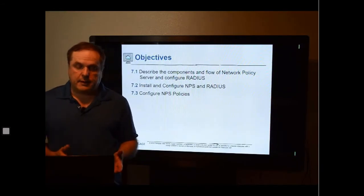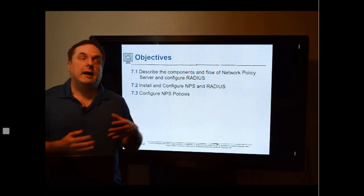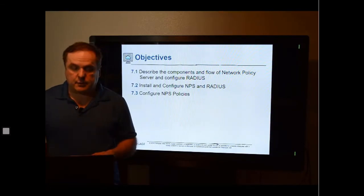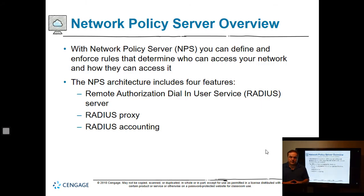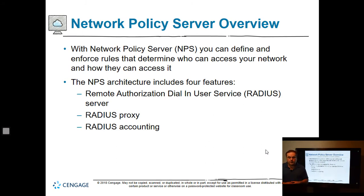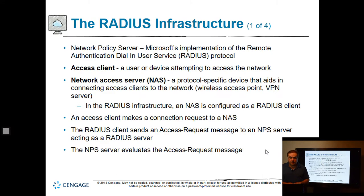We're going to be going over network policy server and RADIUS, which we touched on in the previous module, but we're going to go into a little bit more detail. With network policy server, we can define what you can do, what roles, what rules, what type of access you can have. The NPS architecture includes four different features: Remote Authorization Dial-in Service or RADIUS, RADIUS Proxy, and RADIUS Accounting.